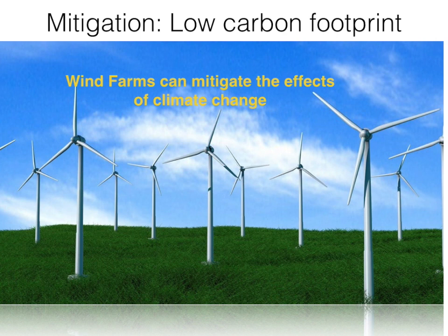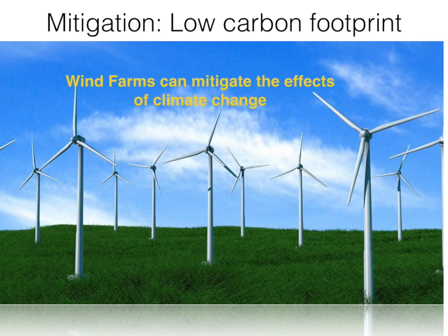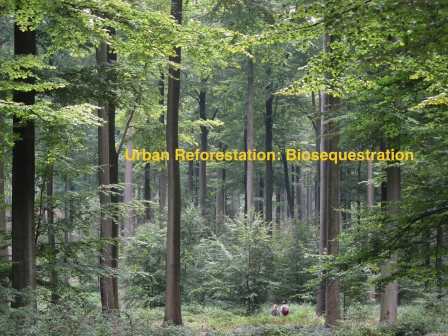Basically we can mitigate or adapt to the effects of climate change. In terms of mitigation, one strategy is to become a low-carbon society — for example, using wind farms to generate electricity that can supplement or totally replace fossil fuel-based electricity generation. This would make us less reliant on fossil fuels and less likely to add carbon dioxide to the atmosphere. Another approach is to sequester CO2 already present in the atmosphere through biosequestration or creation of urban jungles and urban reforestation.